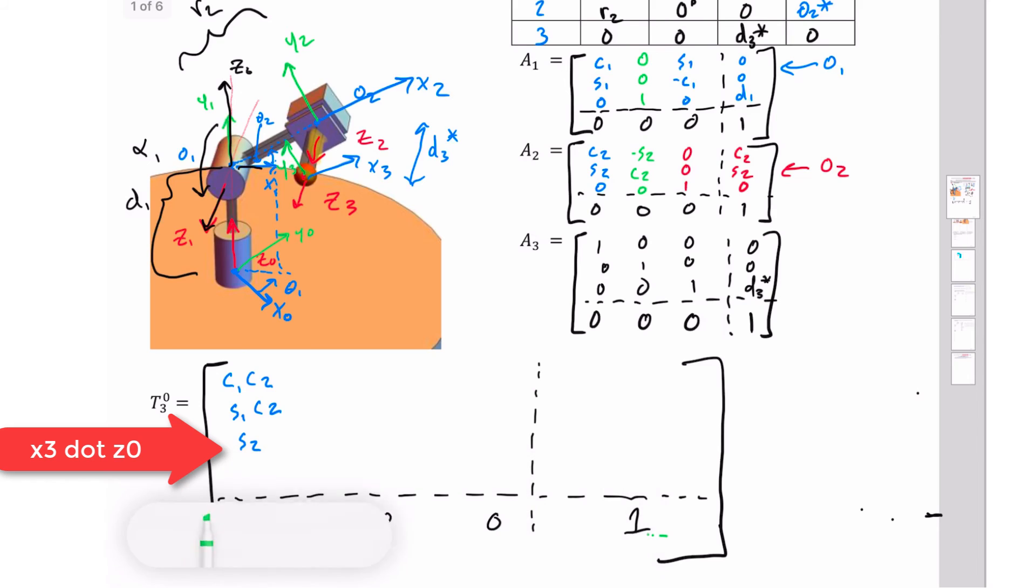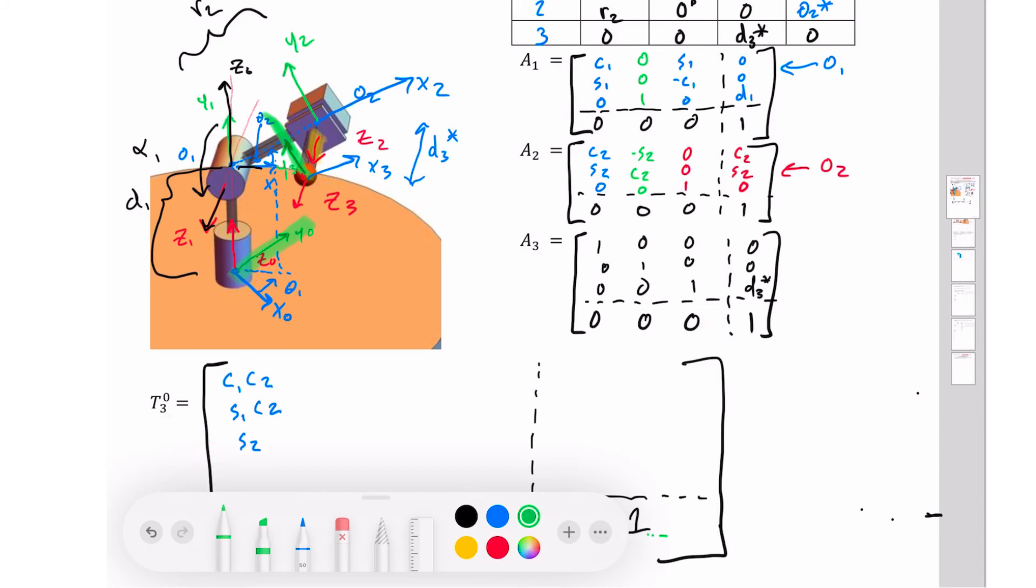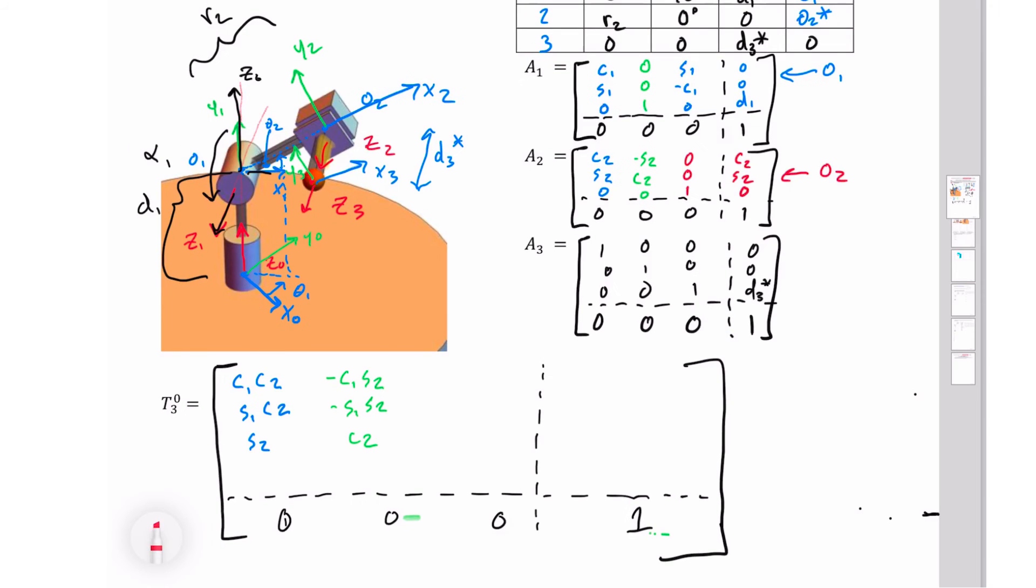Next we want to look at where is this y3 in relationship to y0. So this one, we've got a negative cosine 1 sine 2, and a negative sine 1 sine 2, and then a cosine 2. Finally, we want to look at where is z3 in terms of z0. One of the interesting things you see is that it's always perpendicular. So we can write this in. We've got it's just sine 1, cosine 1, and 0. So this is always perpendicular.